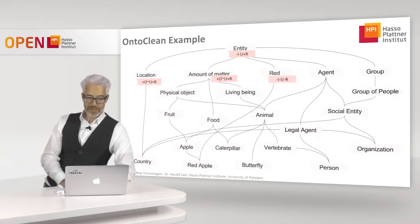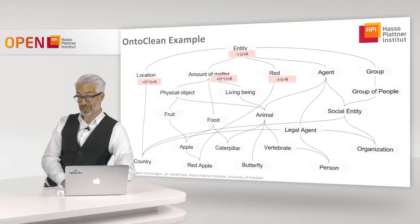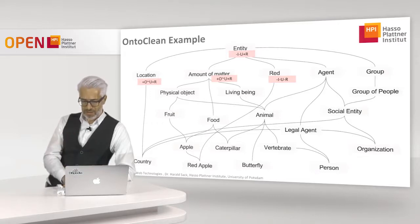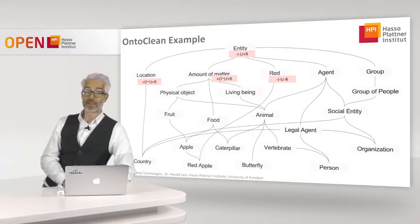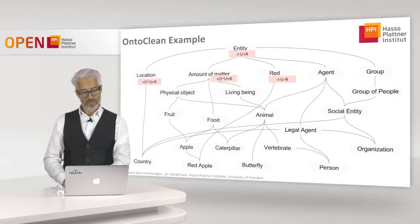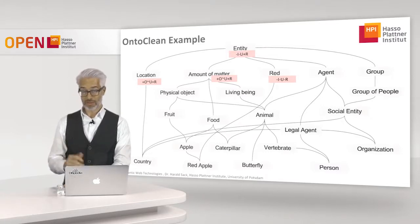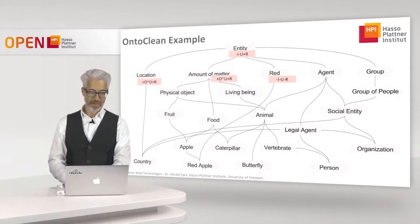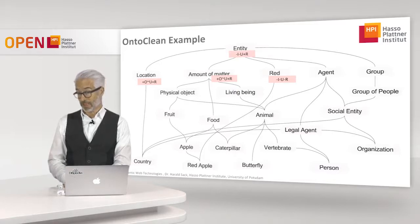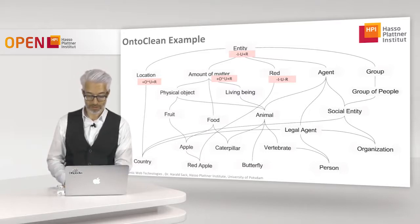For 'red' — things that are red — there is no common identity criterion besides the fact they are all red, and you cannot differentiate them further. So it's minus I. The same for unity: these red objects have no common unity criterion, so minus U. And if something ceases to be red — for example if it's painted green — the entity still exists. So it is not rigid: minus R.